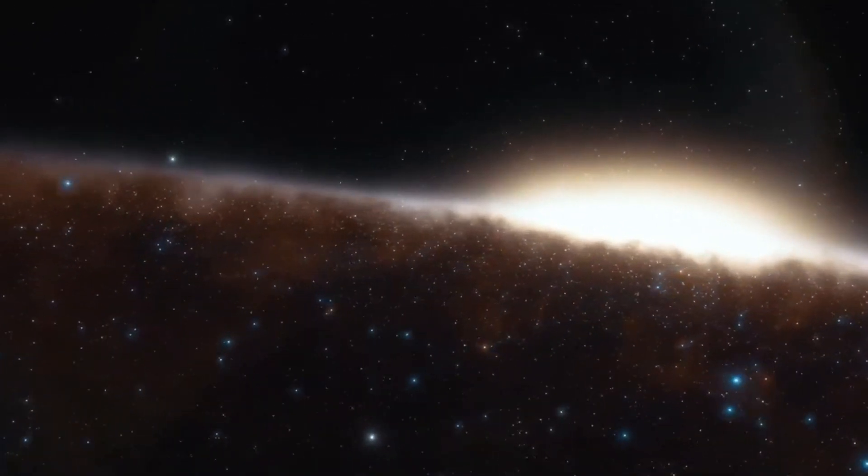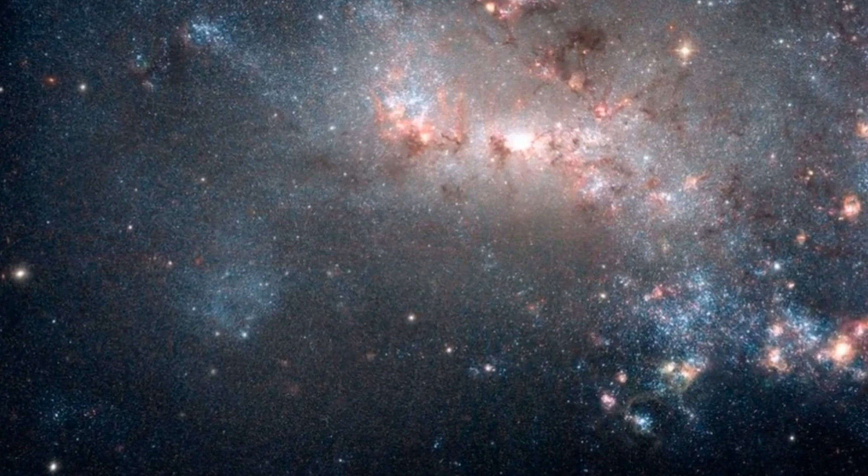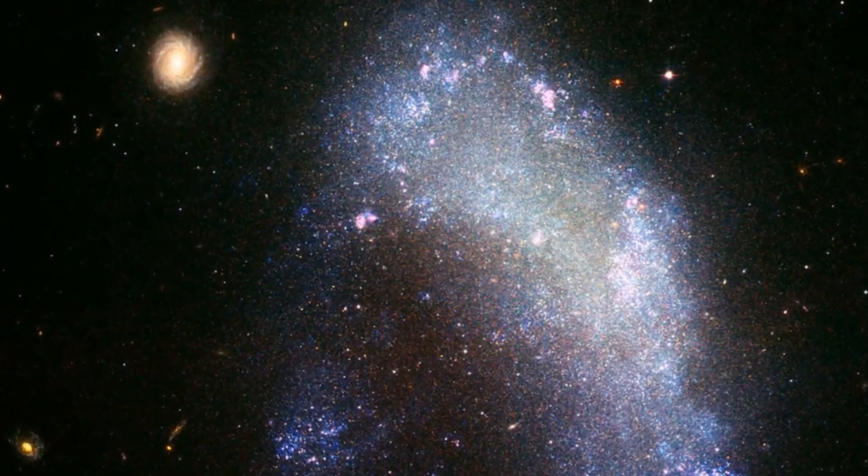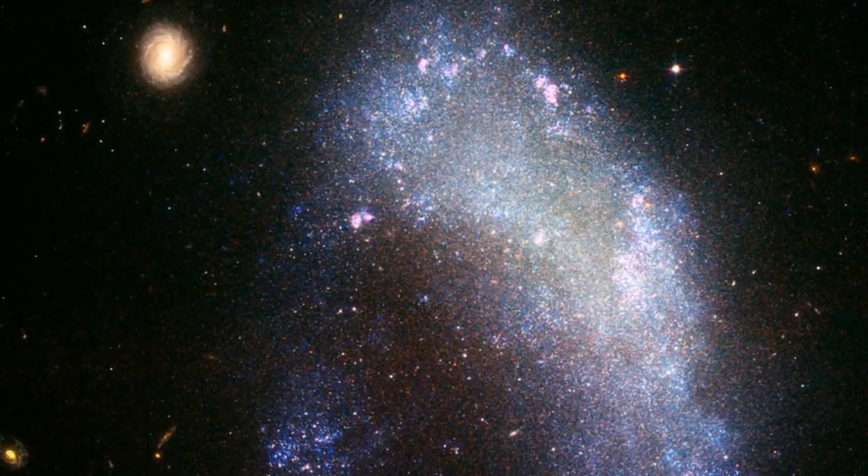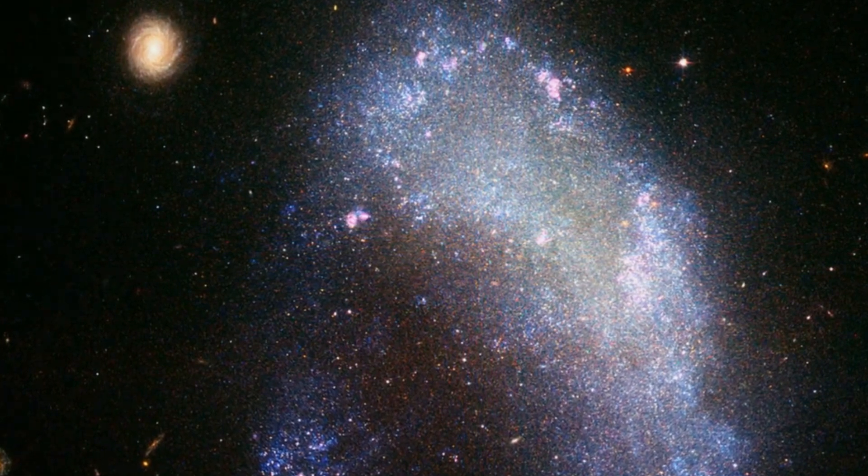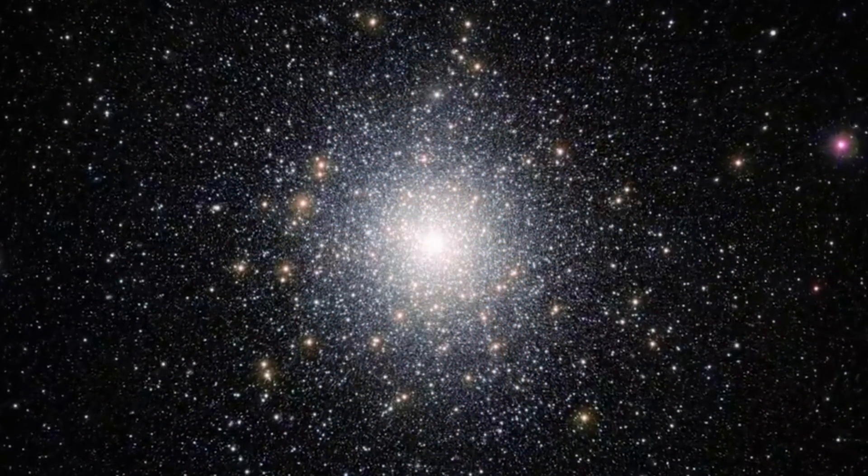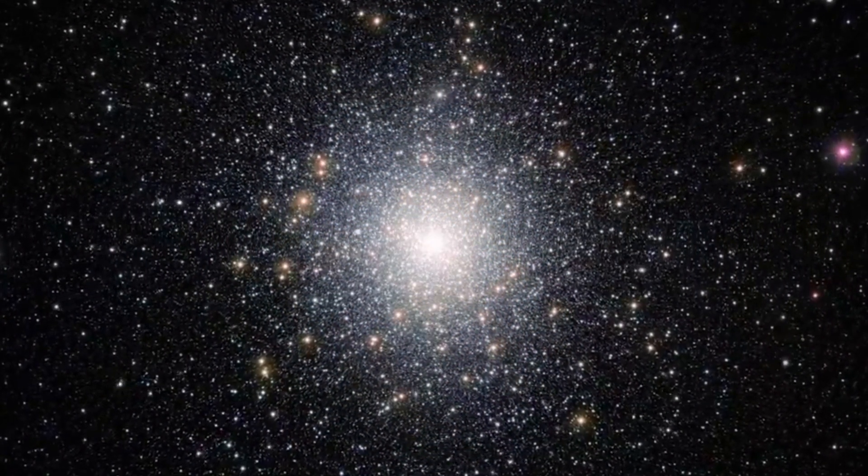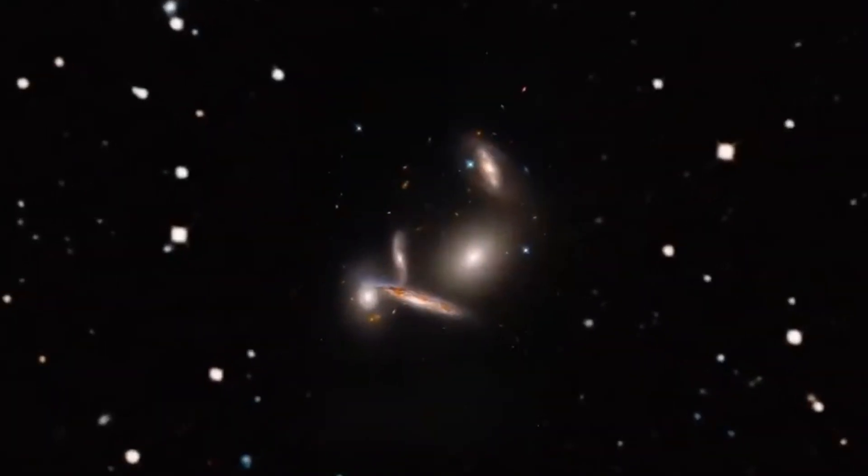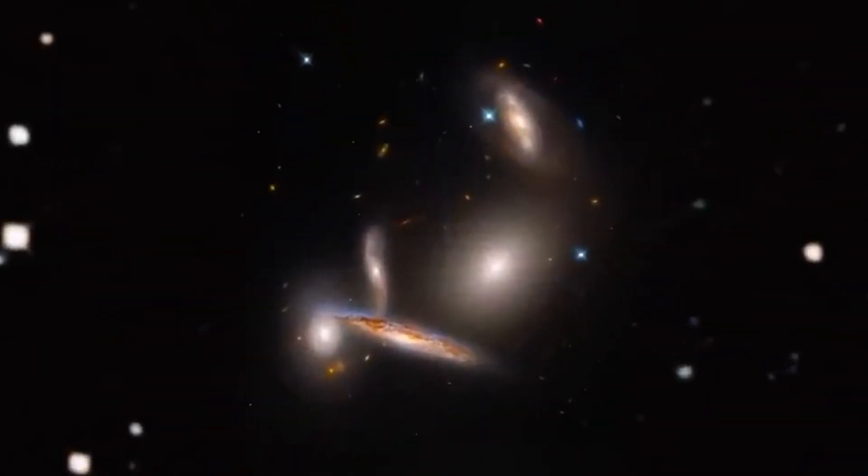Additionally, the combined galaxies will glow brighter with ramped-up star formation. Massive turbulence and gas flows caused by the collision will birth new stars. The Milky Way today forms about one sun-like star a year. During the Andromeda merger, that rate may increase a hundredfold for a short time. So mergers stir up stellar nurseries.